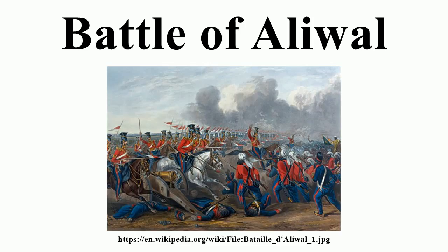Unlike most of the battles of both Anglo-Sikh wars, when the Sikhs at Aliwal began to retreat, the retreat quickly turned into a disorderly rout across the fords. Most of the Sikh guns were abandoned, either on the riverbank or in the fords, along with all baggage, tents and supplies. They lost 2,000 men and 67 guns.